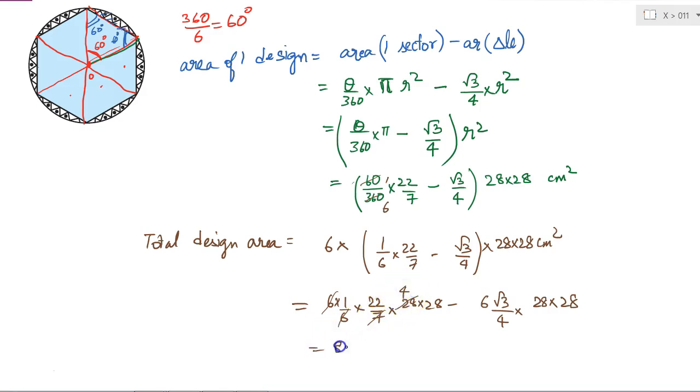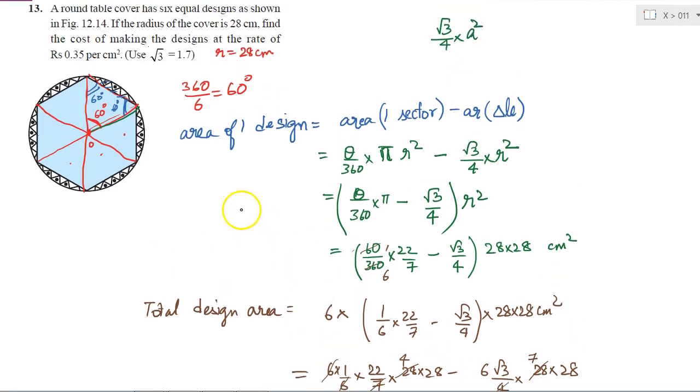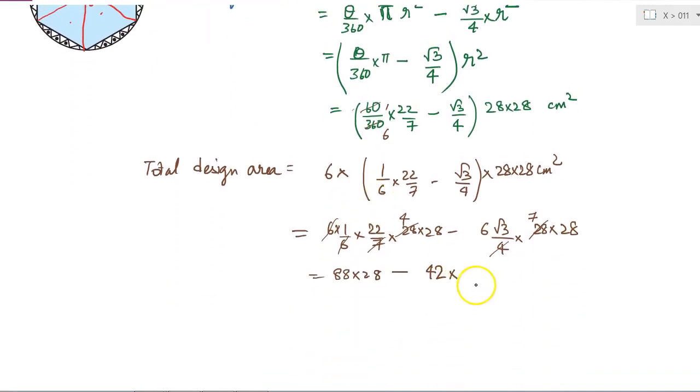So here I will get 88 into 28 minus, here I know 4 into 7 is 28, so 6 into 7 is 42 into √3 is, it is given in the question, take √3 is 1.7. So if I put √3 is equal to 1.7, it is 42 into 1.7 into 28.